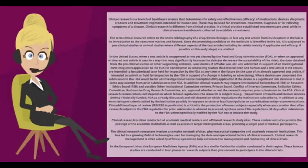Clinical research review criteria will depend on which federal regulations the research is subject to — for example, the Department of Health and Human Services (DHHS) if federally funded, or the FDA as already discussed — and will depend on which regulations the institution subscribes to, in addition to any more stringent criteria added by the institution, possibly in response to state or local laws, policies, or accreditation entity recommendations. This additional layer of IRB/REB review is critical to the protection of human subjects, especially considering that research subject to FDA regulation for prior submission is often allowed to proceed 30 days after submission to the FDA, unless specifically notified by the FDA not to initiate the study.